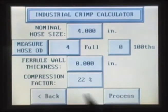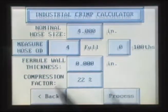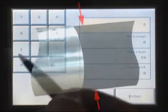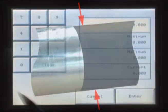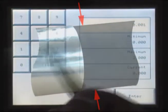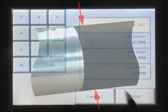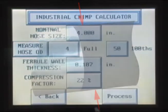Pressing the Measure Hose OD button will bring up a full and one-hundredths button. For example, if the hose outside diameter measures 4.50 inches, press the full button and enter 4, and press the one-hundredths button and enter 5.0.